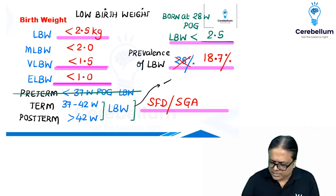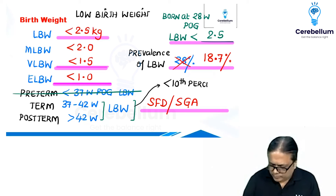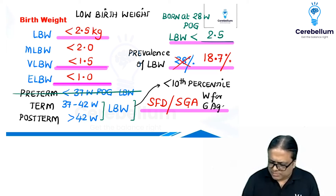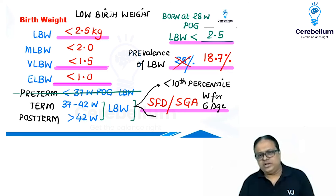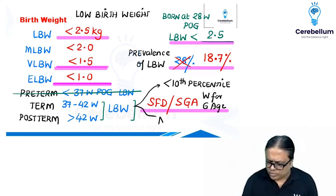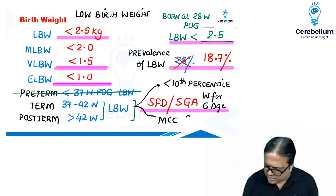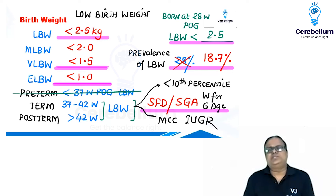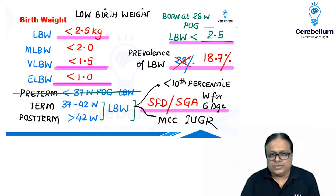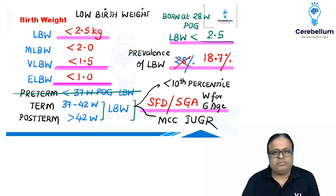The technical definition of small for gestational age is weight less than the 10th percentile for gestational age. The most common cause of small for date or small for gestational age in India is IUGR — intrauterine growth restriction. These are the key questions asked from the birth weight and low birth weight topic in the FMG exam.